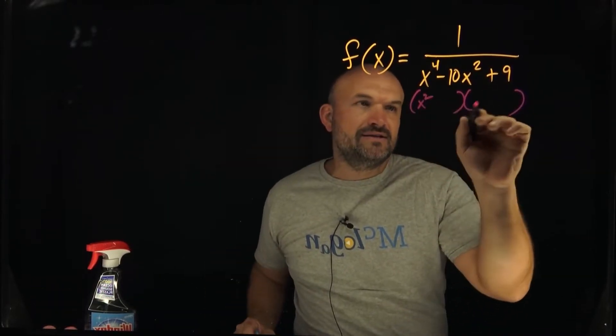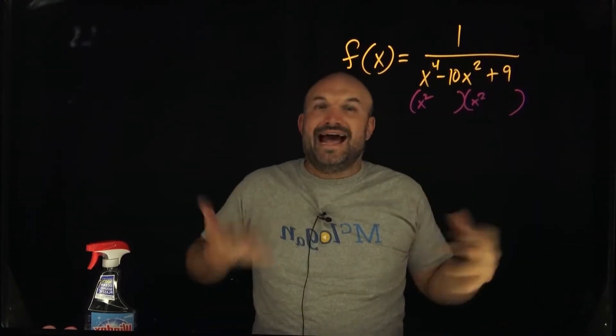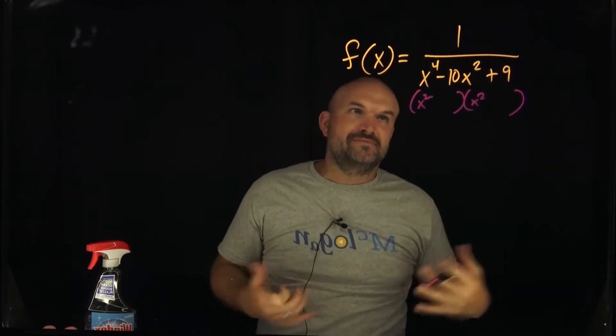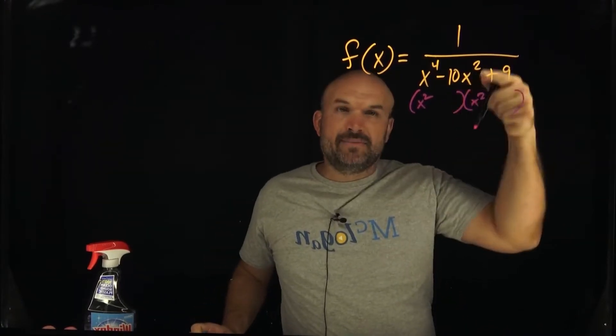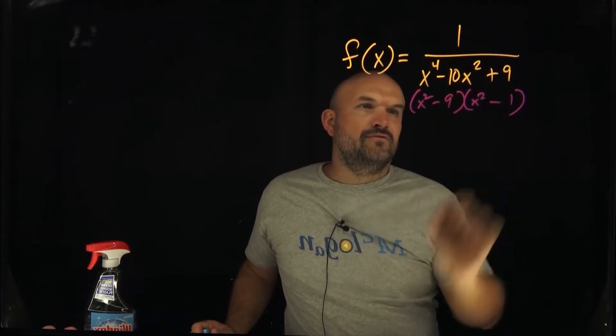I do want to do an x squared times an x squared. And then we've got to think about what two numbers multiply giving 9 and add to give me a negative 10. Well, since they have to add to give me a negative, I know they both have to be negative since they're multiplying to give me a positive. So therefore, it's negative 9 and negative 1.